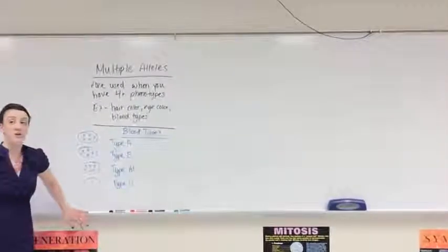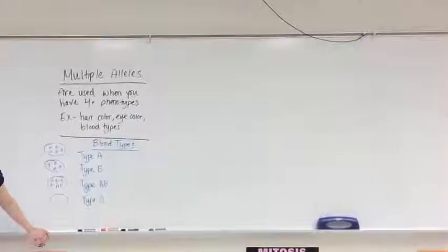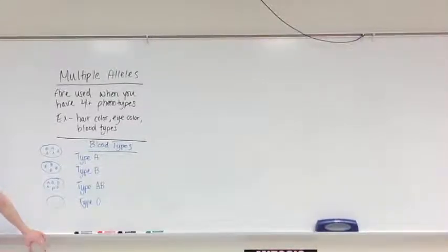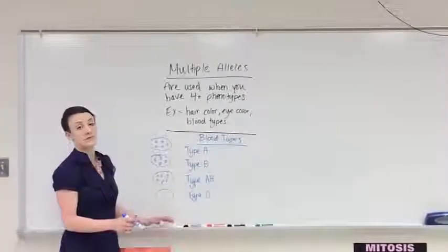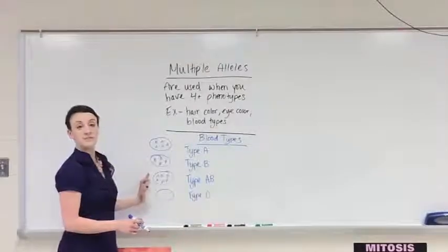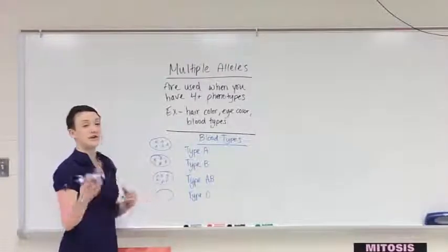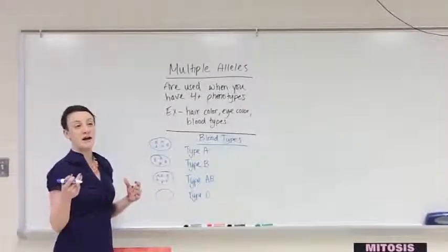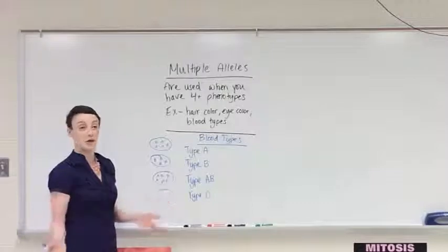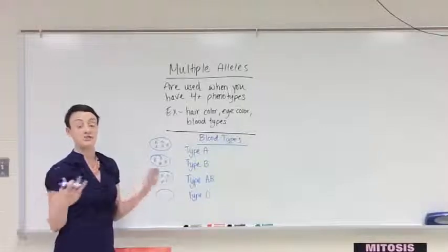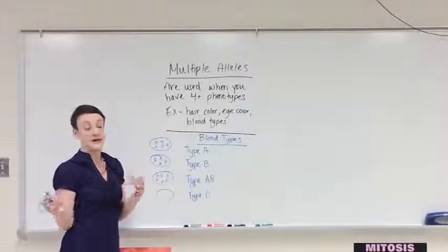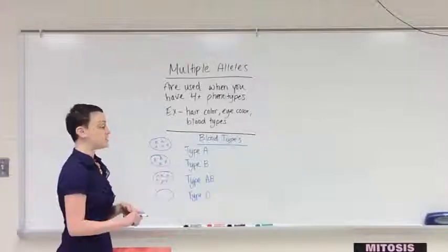People that have type O blood are the rarest type of blood — you can only get blood from other people that have type O blood. If you have type AB blood, you can get blood from anybody: A, B, AB, or O. So we call type O blood a universal donor and type AB a universal receiver. If you have type O blood and go to give blood, they flag your name and call you incessantly because in an emergency situation, they don't have to type you — they can just start giving you type O blood.